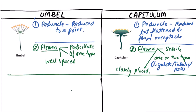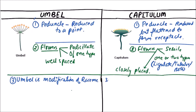Next, umbel is a modification of raceme, while capitulum is also a modification of raceme.